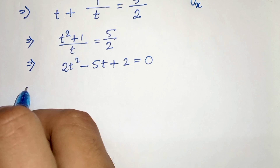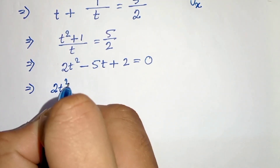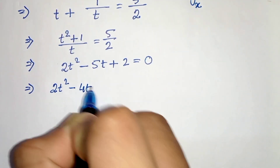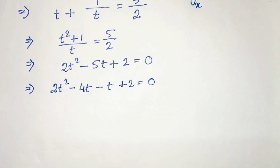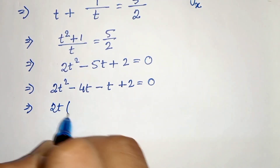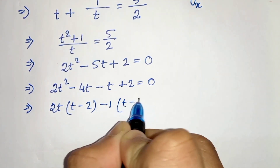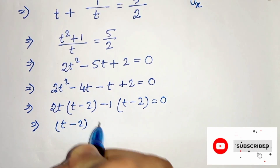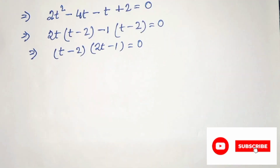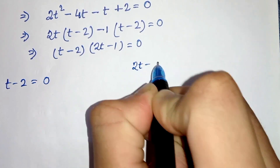Simplifying, we get 2t squared minus 5t plus 2 equals 0. To factorize, the product is 4 and sum is minus 5, so we write 2t squared minus 4t minus t plus 2 equals 0. Taking 2t common from the first two terms gives t minus 2, and taking minus 1 common from the last two terms also gives t minus 2. So we factor as (t minus 2)(2t minus 1) equals 0.